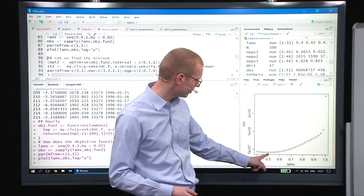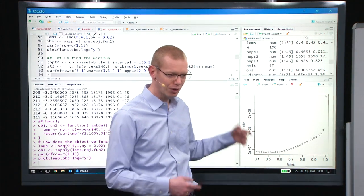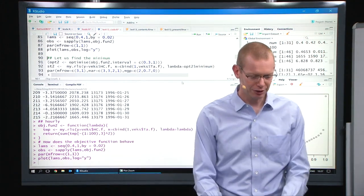Now the lambda value, the optimal lambda is much smaller. It's around 0.5, but again, as before, let's find the optimal value.